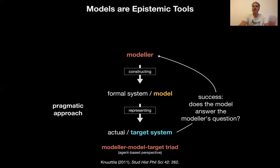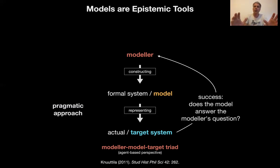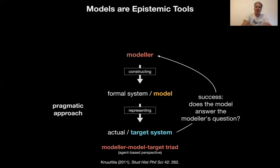The model works if it does what you want it to do. Of course, this is a very dangerous notion — you could build something that's very wrong, you could be delusional, or you could get things right by accident. So we have to think about what it means for the model to be useful in this way and make this notion a bit more precise. This is what Tarja does in the 2011 paper I'm citing, which I recommend you read.